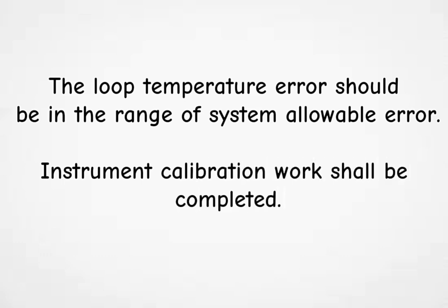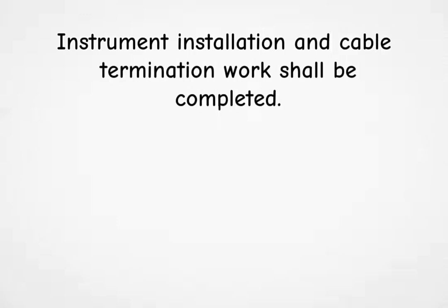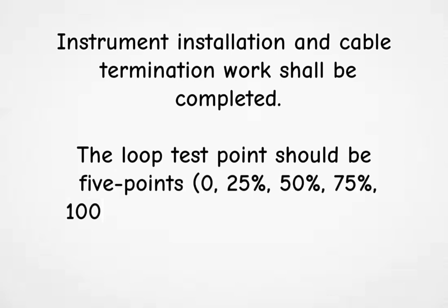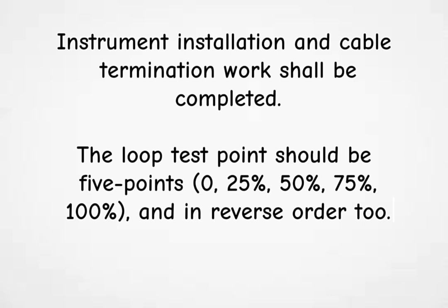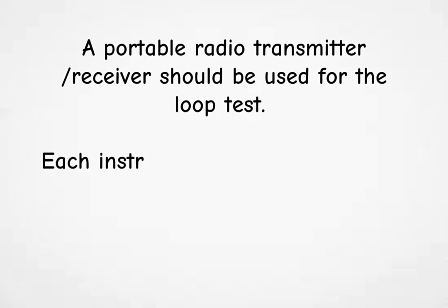Instrument calibration work shall be completed. Instrument installation and cable termination work shall be completed. The loop test points should be 0%, 25%, 50%, 75%, 100%, and in reverse order too. A portable radio transmitter and receiver should be used for the loop test.